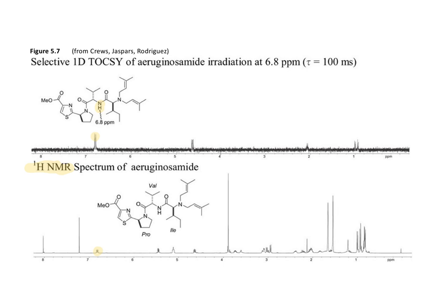We can now see that it's correlated with this signal, this signal, and these two doublets, and that corresponds with the alpha proton, which is then connected to an isopropyl secondary carbon, and then we have the diastereotopic methyl groups of the amino acid valine.